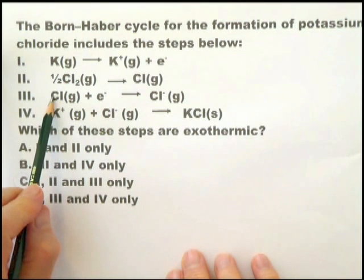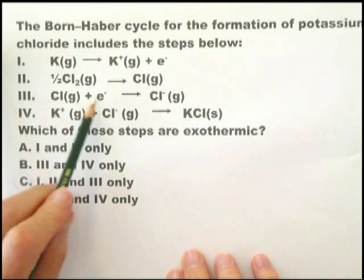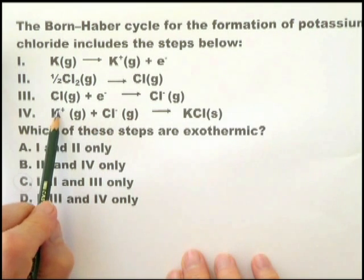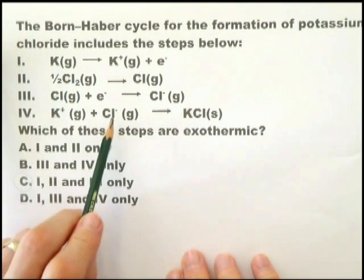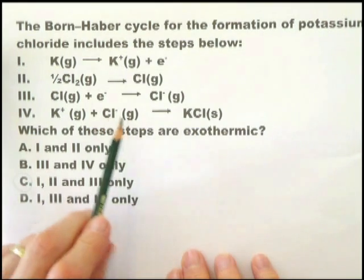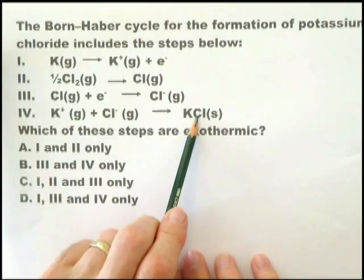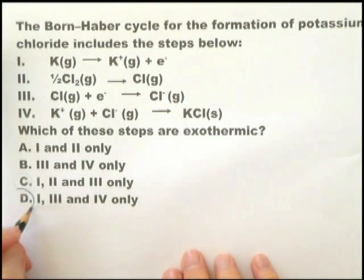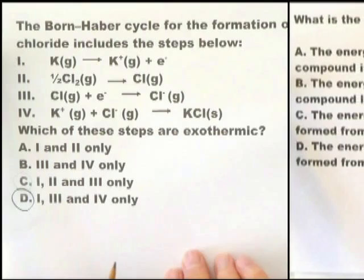This one is exothermic. Chlorine atoms definitely like electrons. And this one is exothermic because you're getting a positive ion and a negative ion combining together to form the potassium chloride solid. So that's exothermic. So we've got 1, 3, and 4 are exothermic. And there we are, 1, 3, and 4 are exothermic.